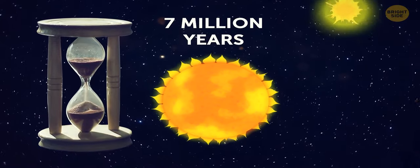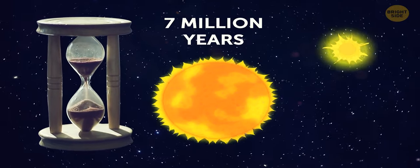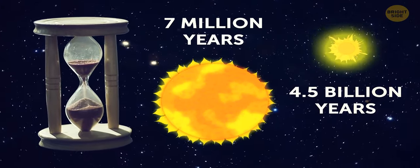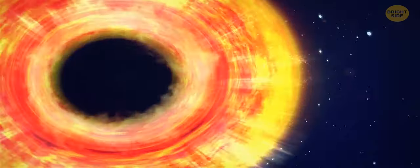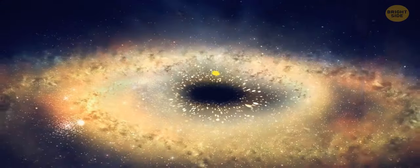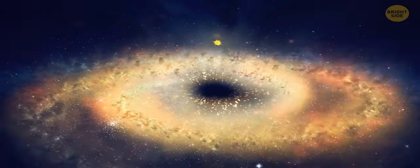Quasi-stars would have a pretty short lifespan, around 7 million years. Just for comparison, our Sun is about 4.5 billion years old, and it's only halfway through its lifetime. But either way, during this short period, the black hole at the center would grow to be about 1,000 to 10,000 times the size of our Sun.